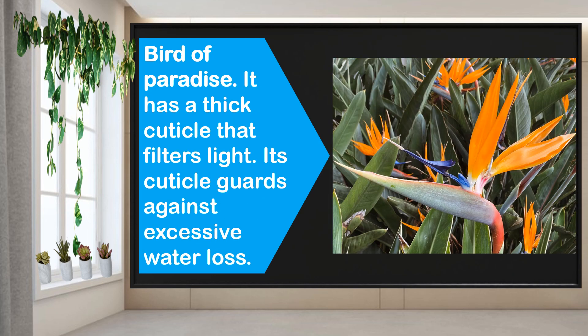Next is the bird of paradise. It has a big cuticle that filters light. Its cuticles guard against excessive water loss. That's why when you use this in a flower vase, it will take time to lose water.